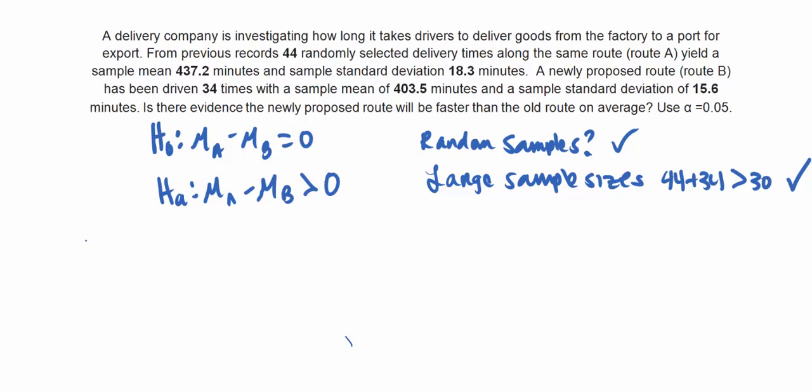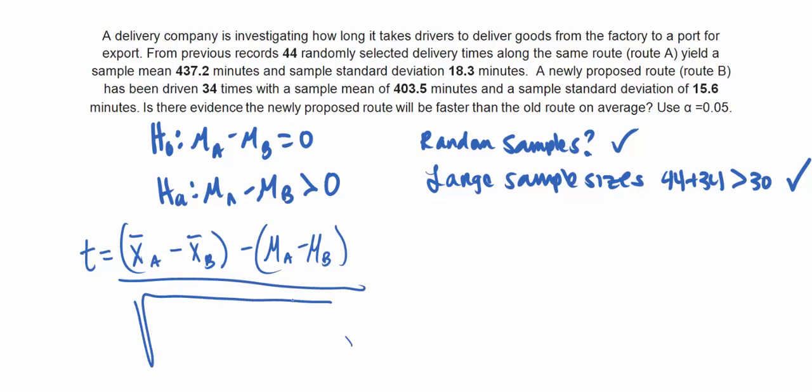So our t-test statistic is equal to x-bar A minus x-bar B minus our claim of mu A minus mu B, all divided by the standard deviation of the estimate or standard error, which is S A squared over N A plus S B squared over N B. And we can simply just plug in values to get this.